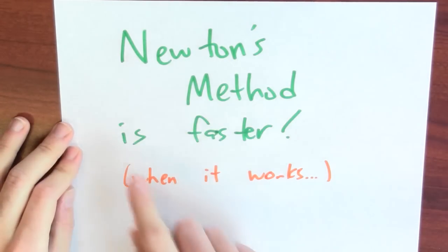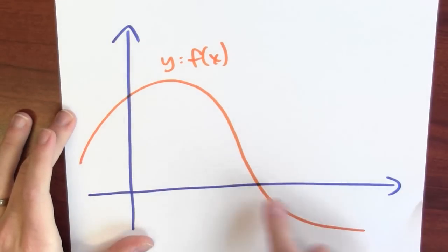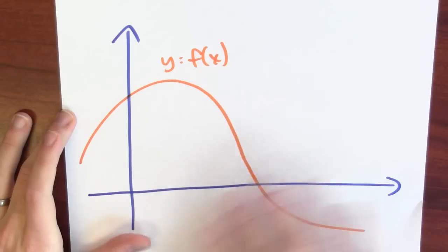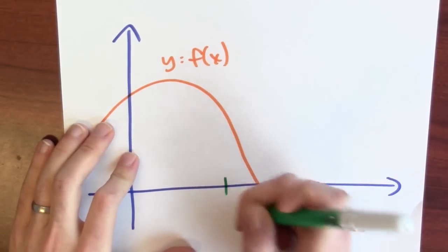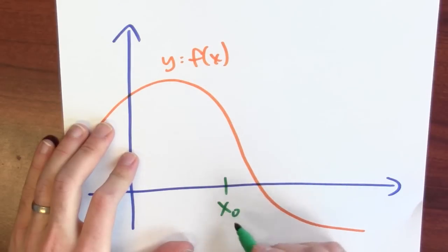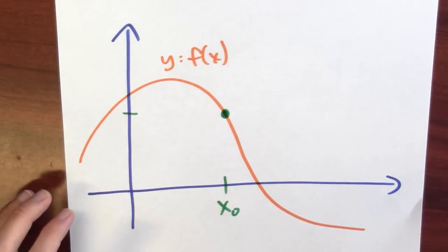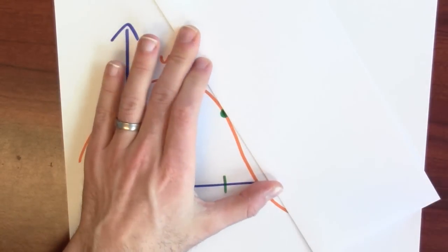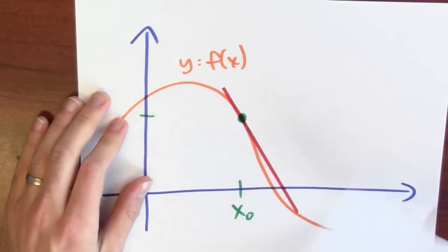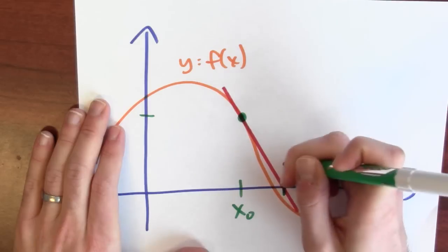A different method called Newton's method is much faster than the bisection trick — at least when it actually works. What I'm trying to do is find the x-coordinate where the graph crosses the x-axis. Instead of marching in from either side using the intermediate value theorem, Newton's method has us just start by making a potentially bad guess. Here's my first guess — I'll call it x sub 0. That's not a very good guess because the function's output is all the way up here, not that close to 0.